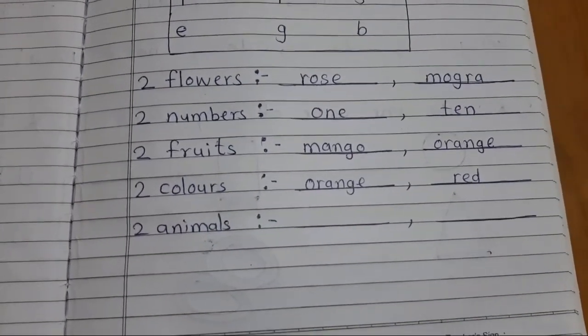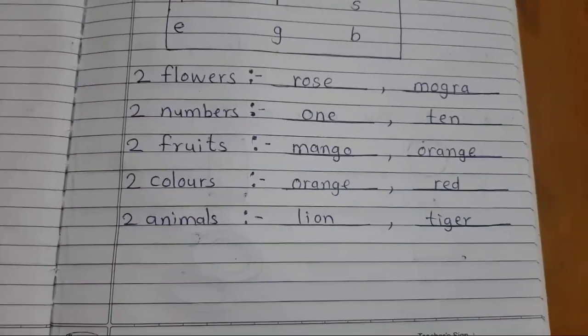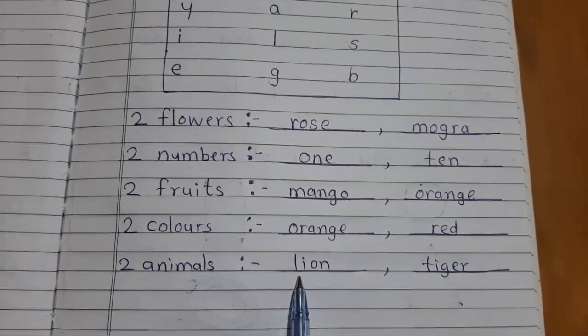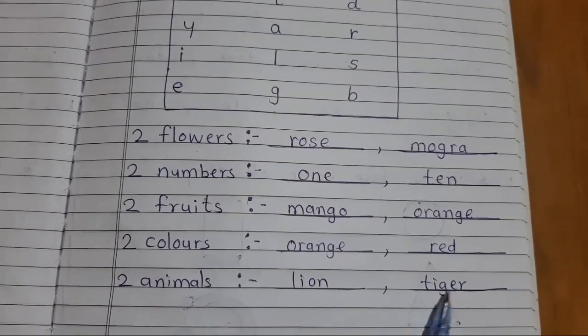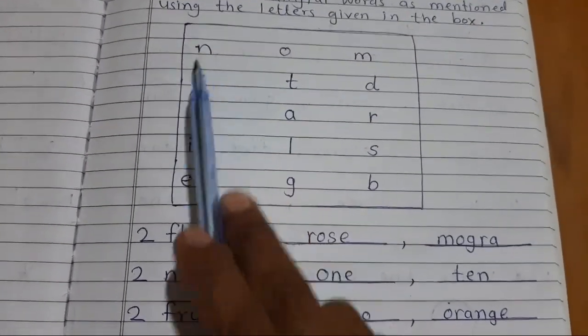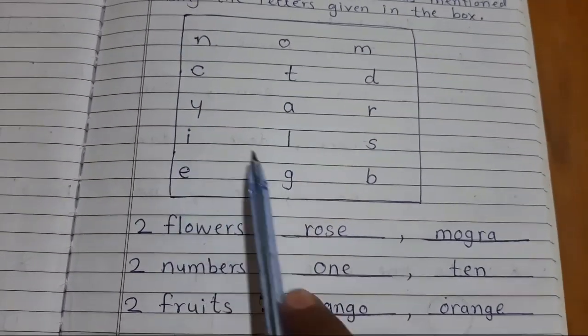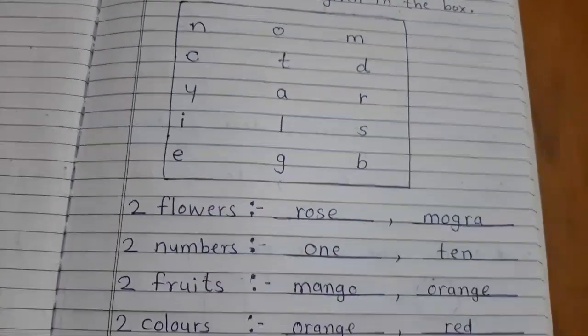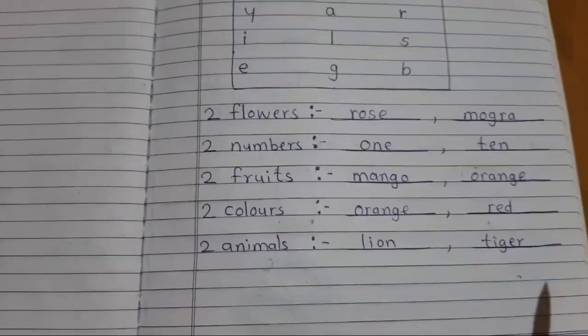Now next question is two animals name. See two animals name. L-I-O-N lion and T-I-G-E-R tiger. See here. L-I-O-N lion and T-I-G-E-R tiger. Okay student. Understand.